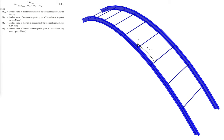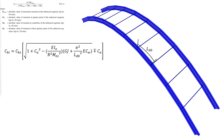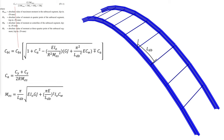The revised lateral torsional buckling modification factor CBI is determined as follows, where CA is a defined factor, CBS is the lateral torsional buckling modification factor for an equivalent straight member, and MES is the elastic critical lateral torsional buckling moment of the equivalent straight member subjected to a uniform moment with a length equal to LDB.